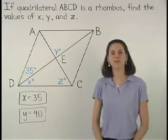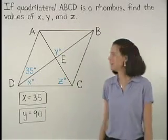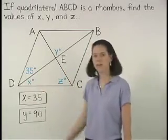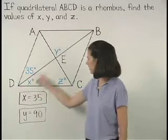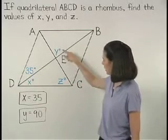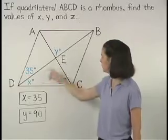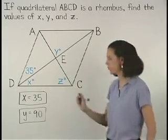And finally, to find the value of Z, let's use triangle DEC. Since angle DEC and the 90 degree angle are vertical angles, the measure of angle DEC must also be 90.